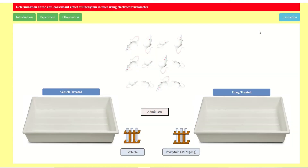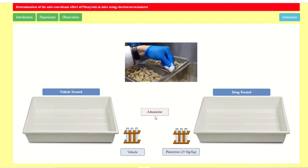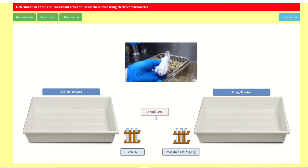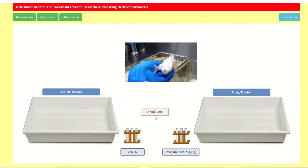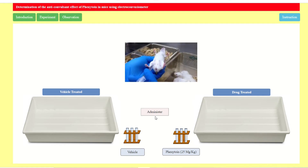Now here we find the animals. We will administer the drugs — vehicle-treated animals will receive saline by IP, and we will give phenytoin 25 mg/kg by IP to the treatment group. We will click administer and give the IP dose to the mice.